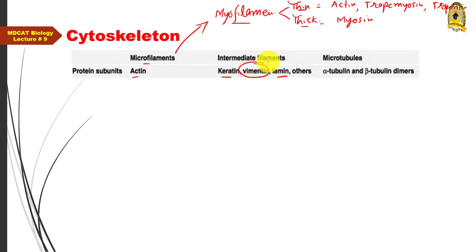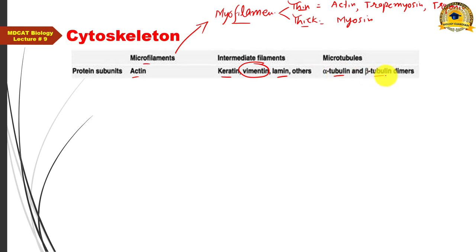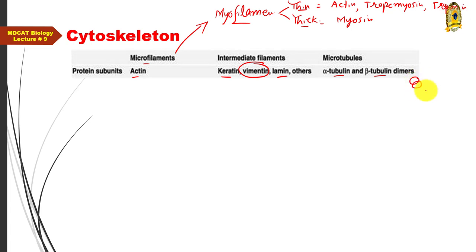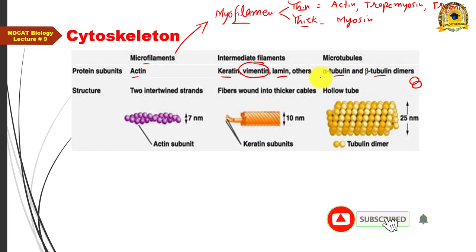Microtubules are made of tubulin protein. Tubulin has two subunits — alpha tubulin and beta tubulin — which combine to form a tubulin dimer. These tubulin dimers arrange around a central axis to form the hollow tubular structure known as a microtubule.